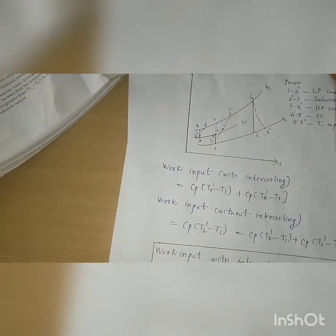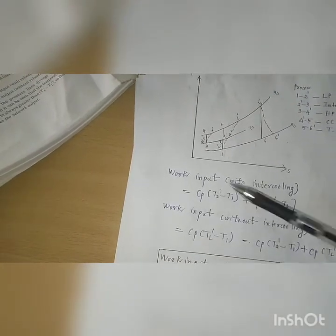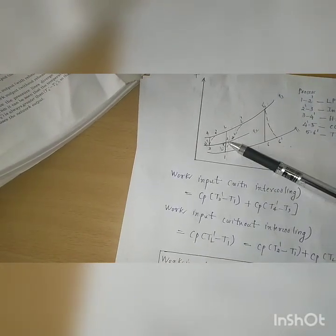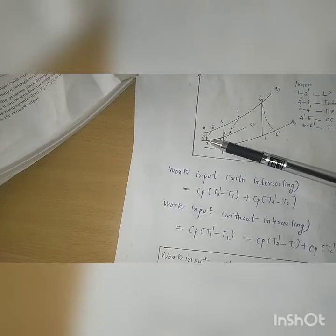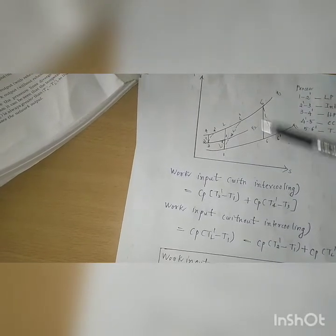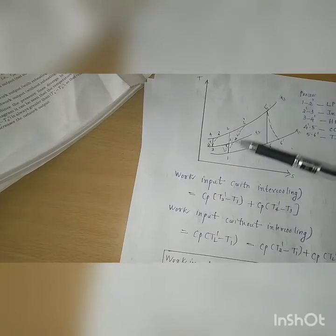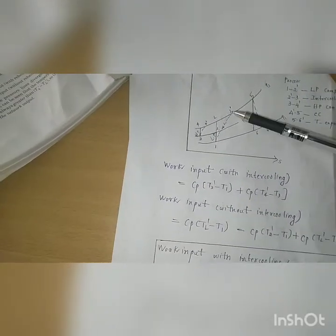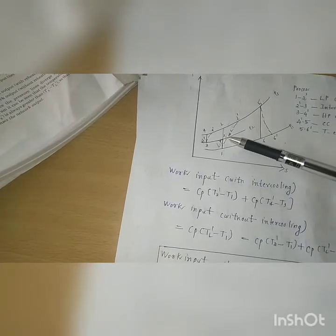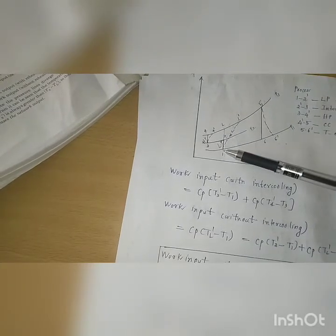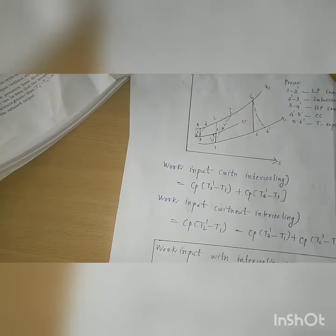The work input with intercooling is Cp × (T2 dash − T1) plus Cp × (T4 dash − T3). Without intercooling, it is Cp × (TL dash − T1). Now, TL dash − T1 can be split as (T2 dash − T1) plus (TL dash − T2).